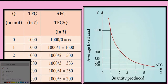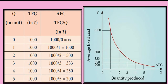Plotting the points: when output is 1, AFC is 1000; when output is 2, AFC is 500; when output is 3, it is 333; when output is 4, it is 250; and when output is 5, it is 200. Joining all these points gives a curve called the Average Fixed Cost curve, or AFC curve.